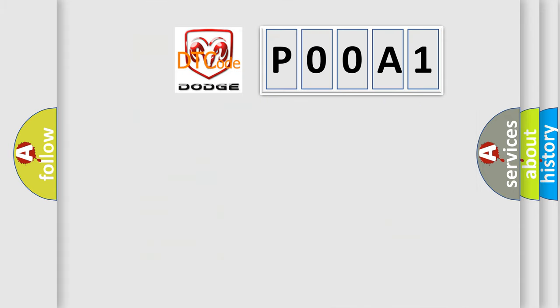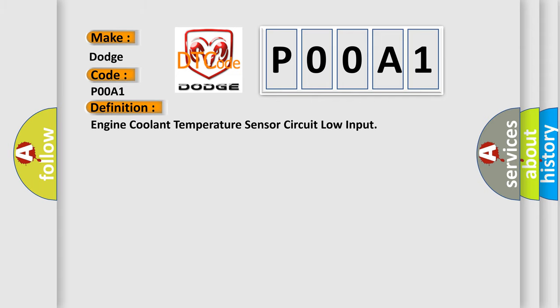So, what does the diagnostic trouble code P00A1 interpret specifically for Dodge car manufacturers? The basic definition is engine coolant temperature sensor circuit low input. And now this is a short description of this DTC code.